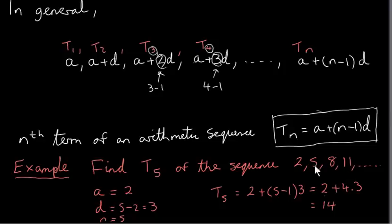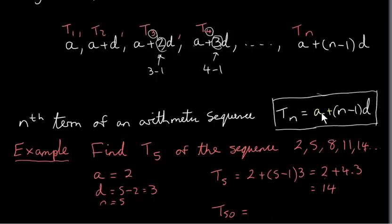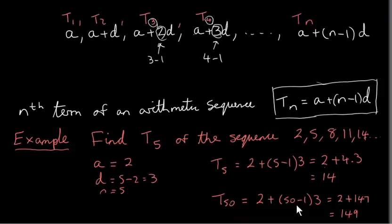That's quite straightforward — we could have just worked this out, because I have the first four terms written down here, so the fifth term is got by adding 3 onto the fourth term: 11 plus 3 is indeed 14. Let's get T50. It's the same formula: the first term a is 2, N is 50, so 50 minus 1 times the difference 3. This gives us 2 plus 49 times 3. 49 times 3 is 147, so T50, the 50th term of this sequence, is 149.